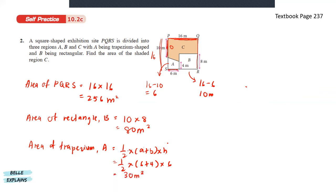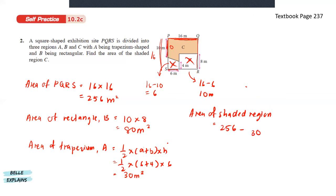Now that we already know the whole area, A, and B, to find C we just subtract A and B. So the area of the shaded region equals the total 256, minus A which is 30, minus B which is 80, giving us 146 meters square.